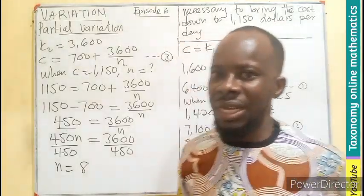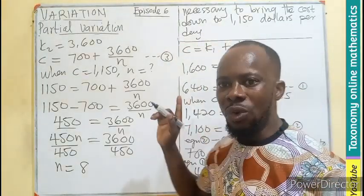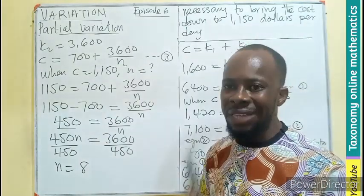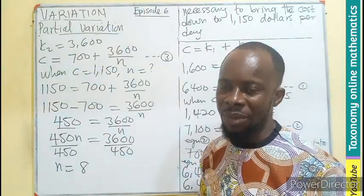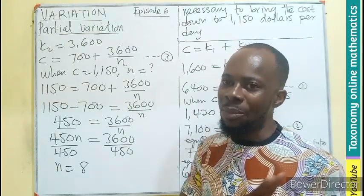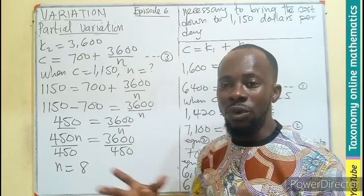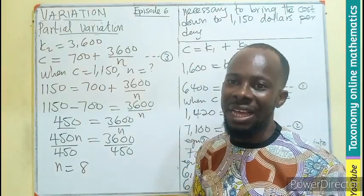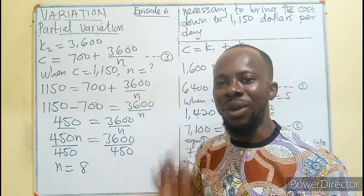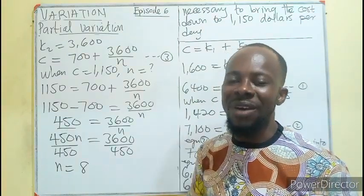When it comes to partial variation, it is only looking for the first two constants. Then the rest is just a substitution. I believe with this, two examples, the first from episode 5 and this, give you the broad knowledge or the fair idea about how questions will be set on partial variation.